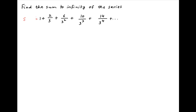Let us denote the given series by S. Subtract 1 from both sides — we get S minus 1 is equal to 2/3 plus 6/3² plus 10/3³ plus and so on.